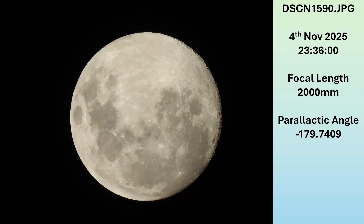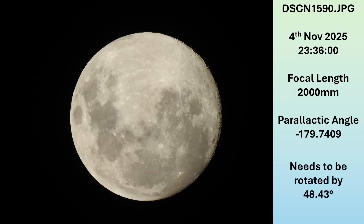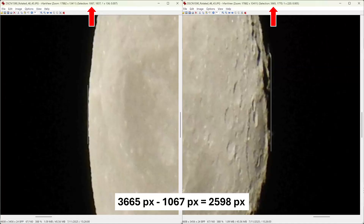Here's the next shot, which was about four hours later as the moon was passing my meridian and it was about 42 degrees above the horizon. So I've rotated towards it a little bit, so it should be closer and therefore appear a bit bigger. The parallactic angle here is 179.74 degrees, so if I want to compare the same edges of the moon that I measured in the first photo, I need to rotate the image by 48.43 degrees. Again I've just grabbed the pixel coordinates of the edges and I get a width of 2,598 pixels.